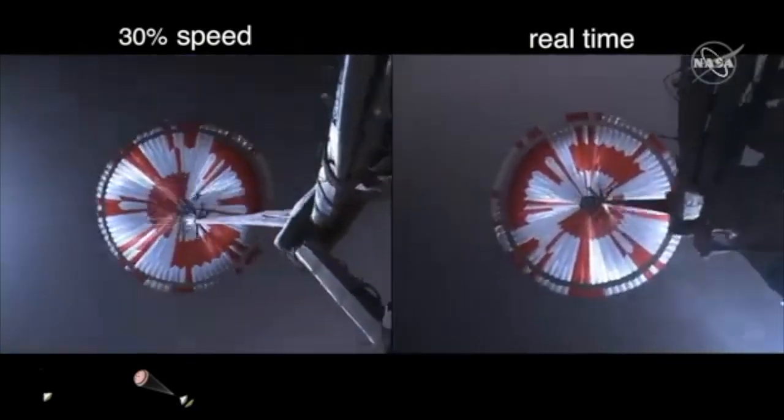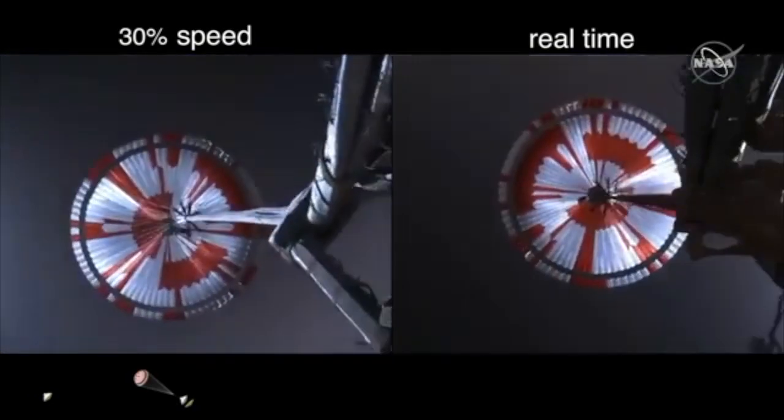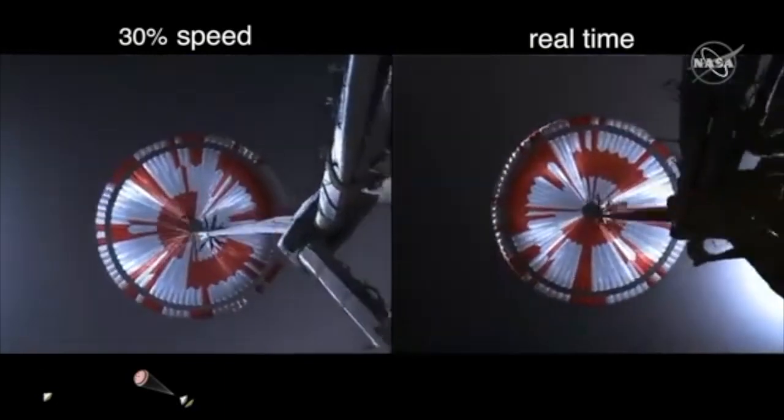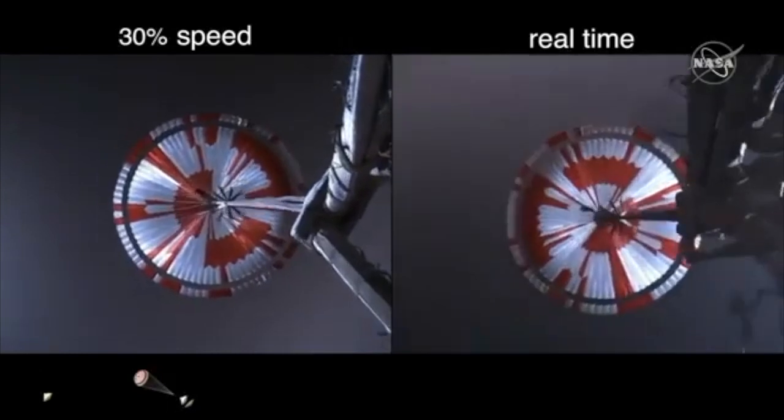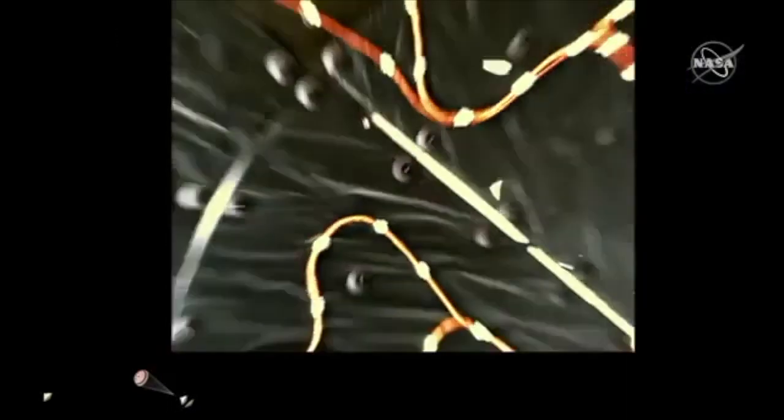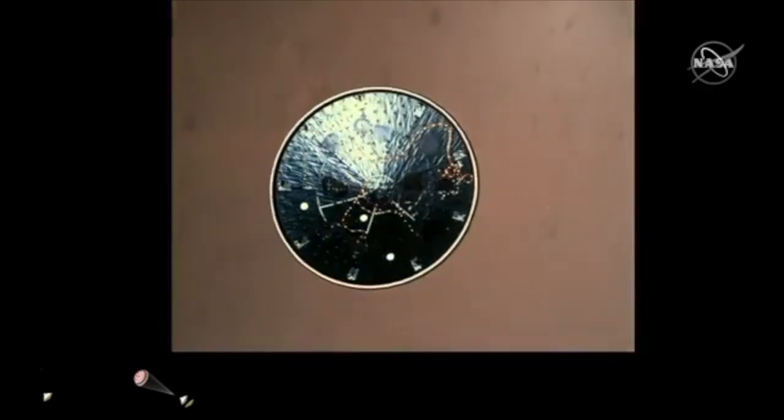Navigation has confirmed that the parachute has deployed and we are seeing significant deceleration in the velocity. Our current velocity is 480 meters per second at an altitude of about 12 kilometers from the surface of Mars. Heat shield set.